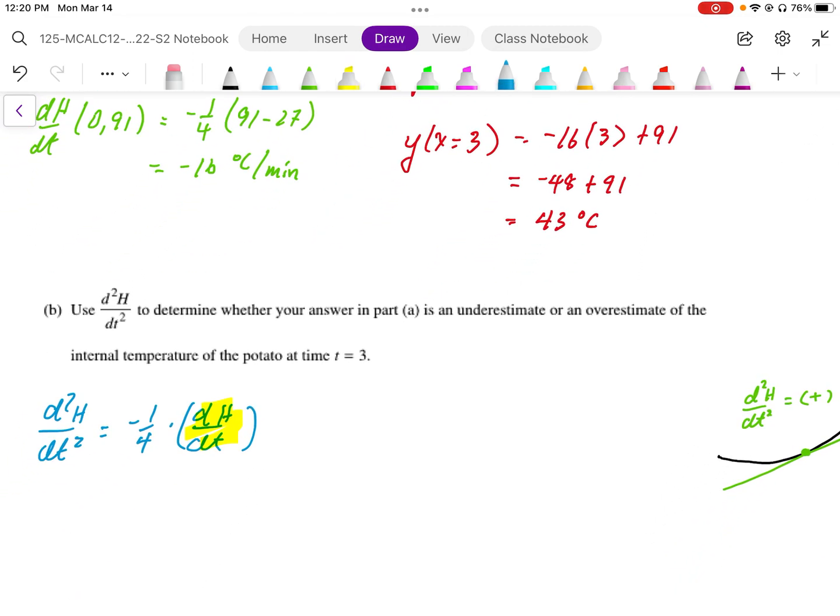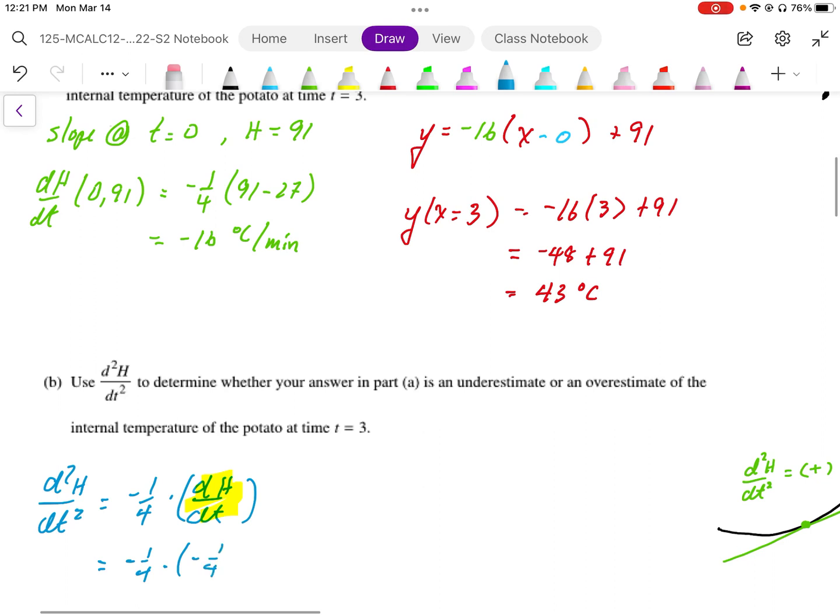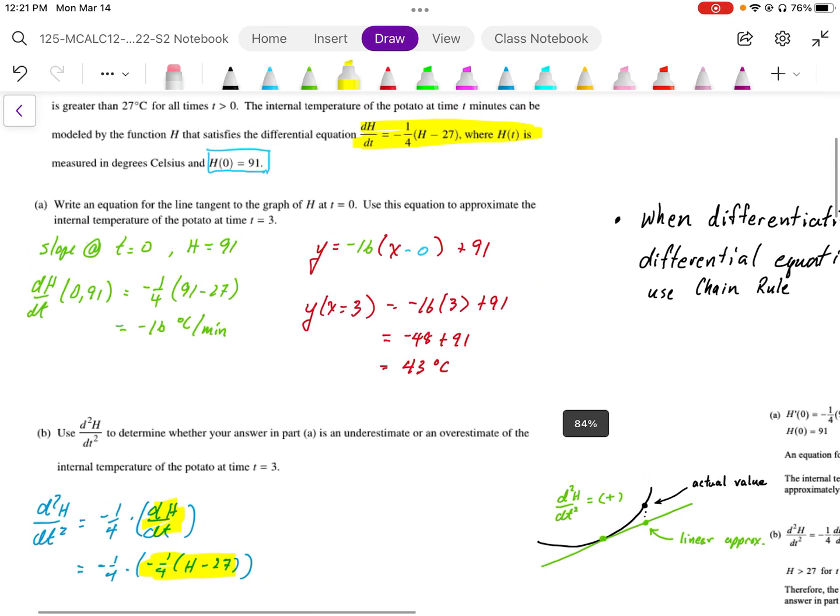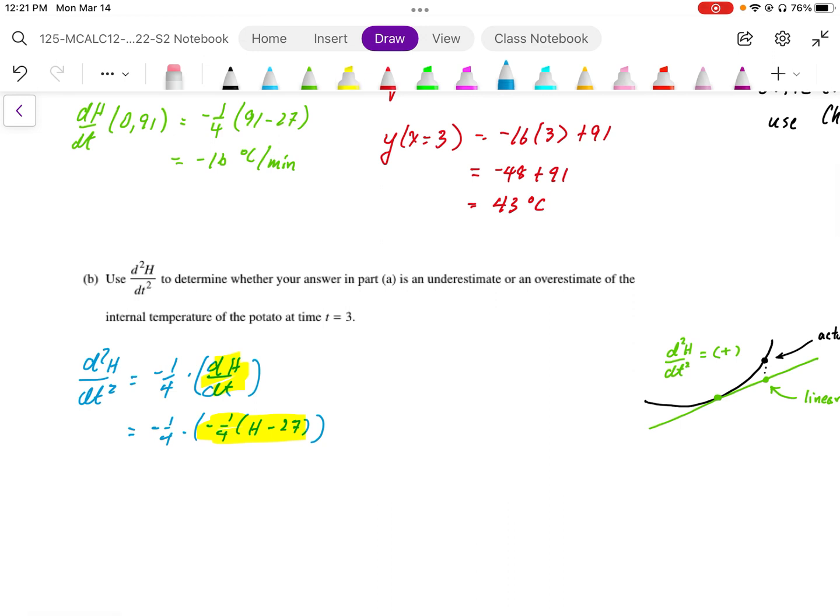Rewriting this equation, we end up with negative 1 over 4 times the dH by dt, which was the original function negative 1 over 4 times H minus 27. That represents our dH by dt from the chain rule. Then we can calculate the concavity, so d squared H over dt squared at H equals 91. We're going to work that out: it's 1 over 16 times 91 minus 27. 91 minus 27 worked out to be 64, and 64 divided by 4 is positive 4. What that means is our concavity here is positive 4.